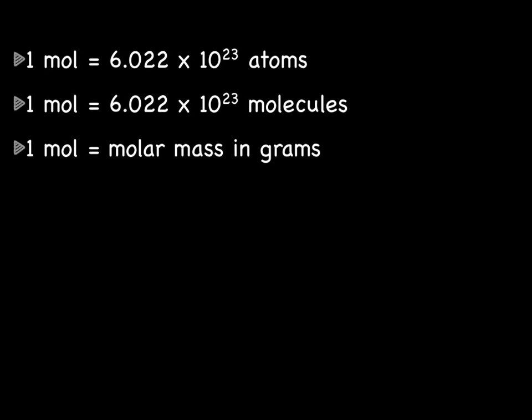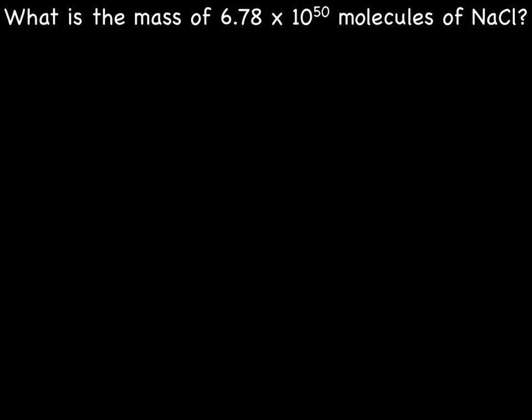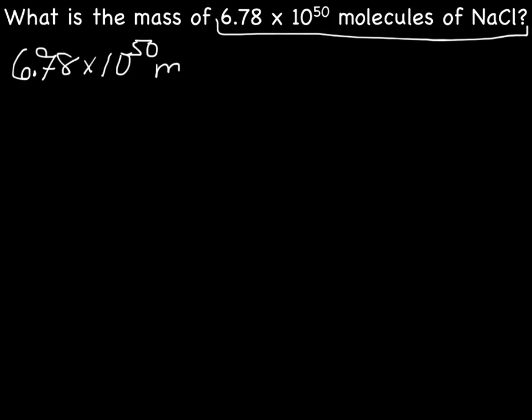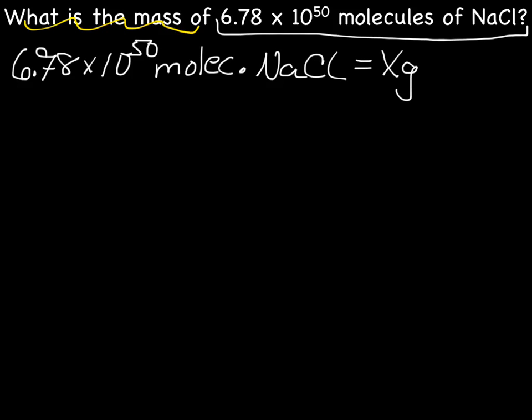Good news is that you actually already know how to do mass to molecules conversions — we're going to be using these same equalities again. Let's convert from molecules to mass. Our practice problem will be: what is the mass of 6.78 times 10 to the 50th molecules of NaCl? The first step is to figure out our math problem. We know we have 6.78 times 10 to the 50th molecules NaCl, and our unknown — the mass — will be X grams of NaCl.